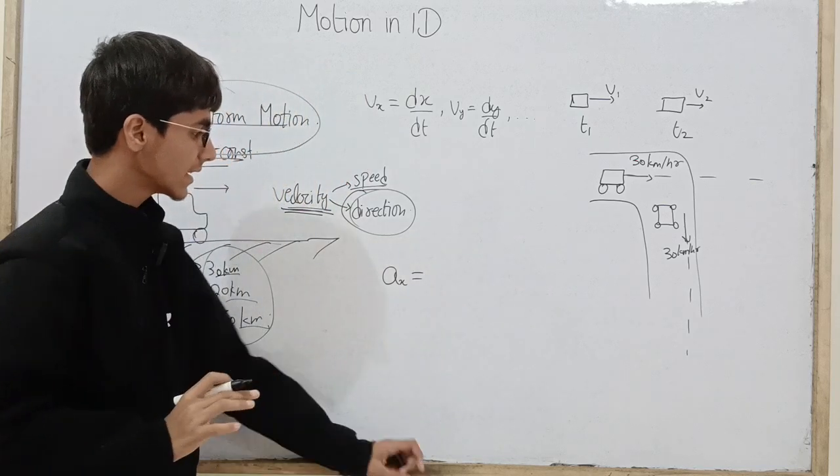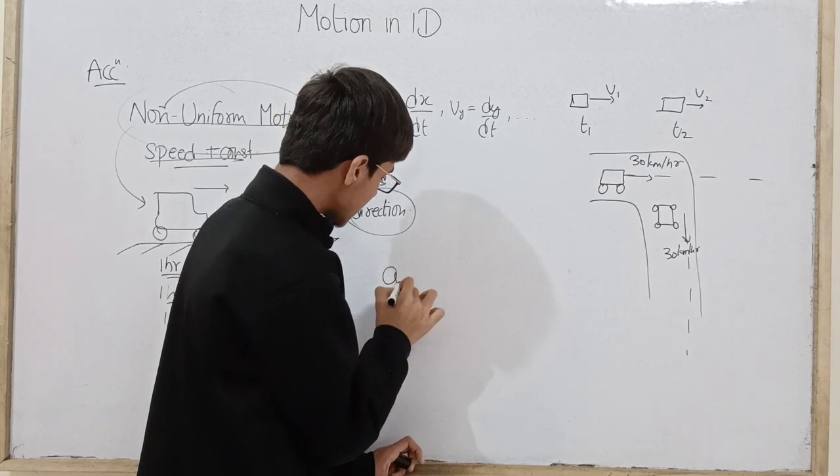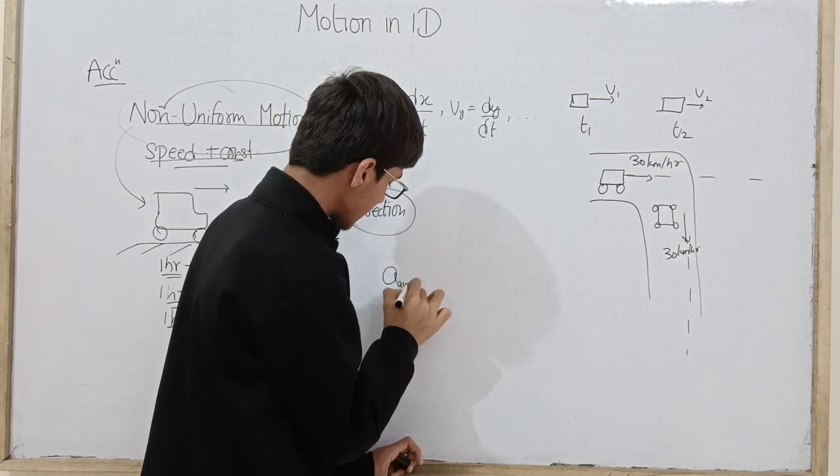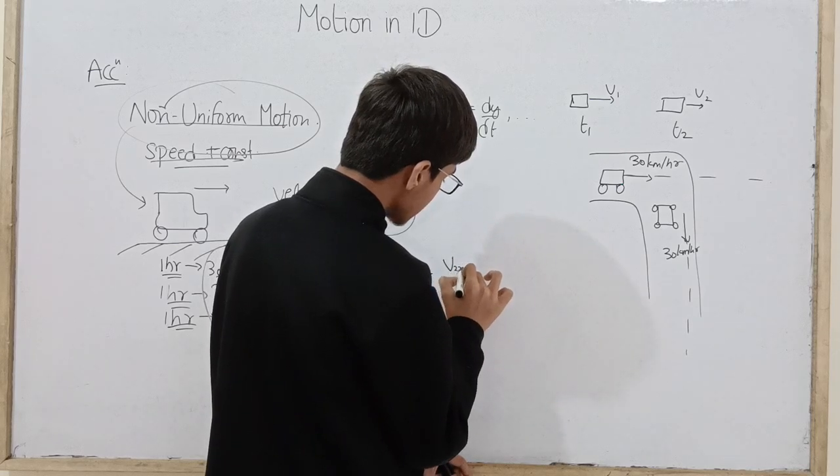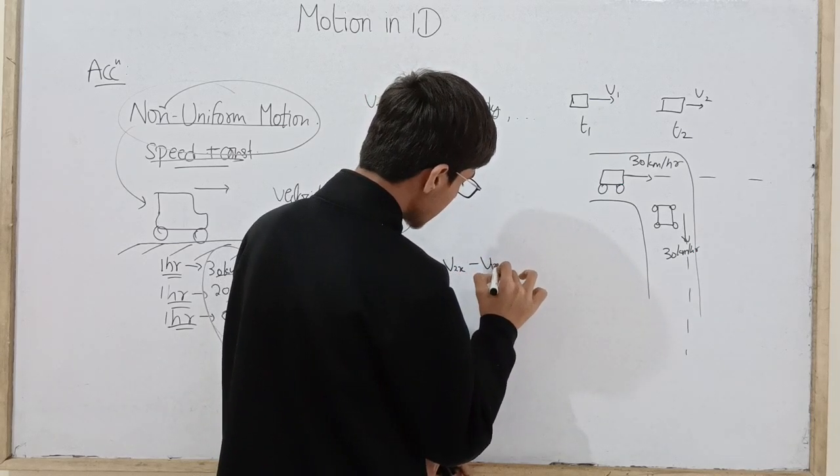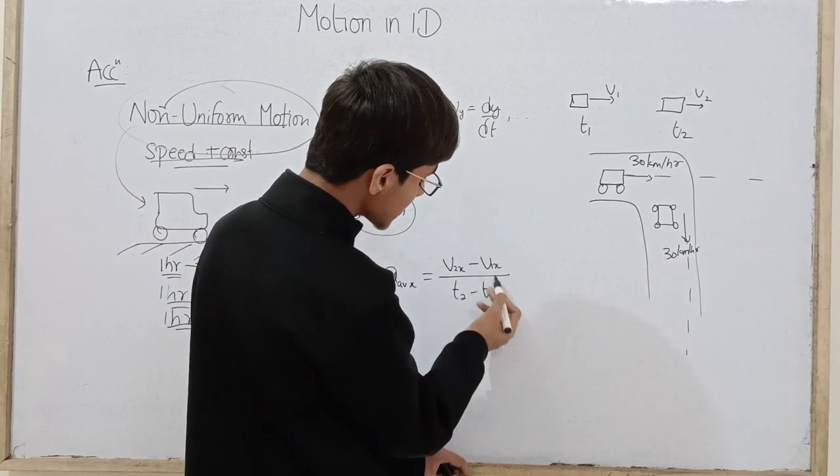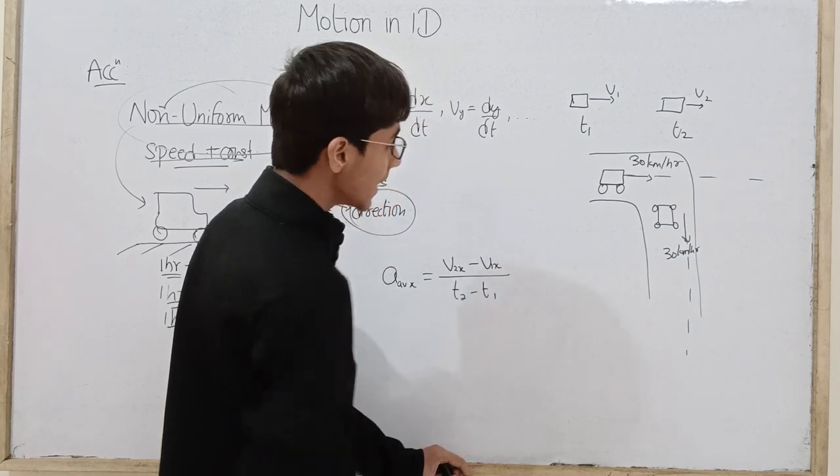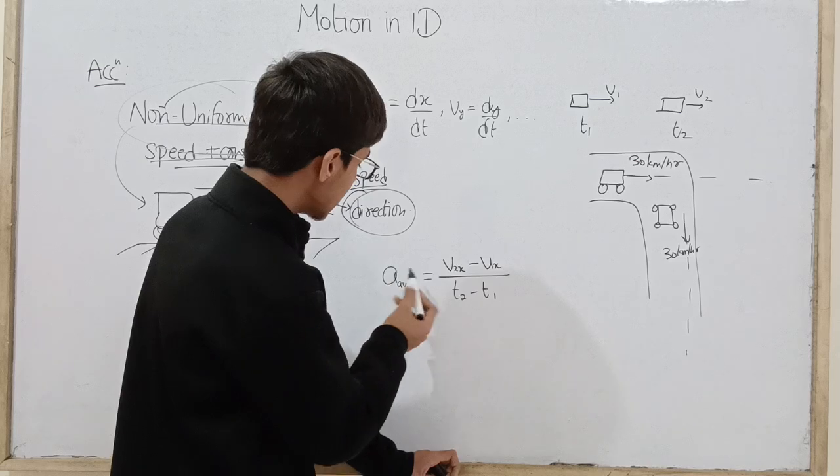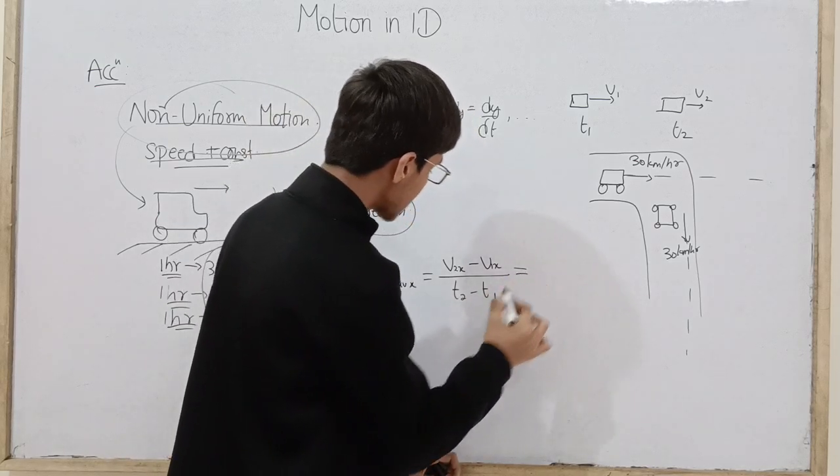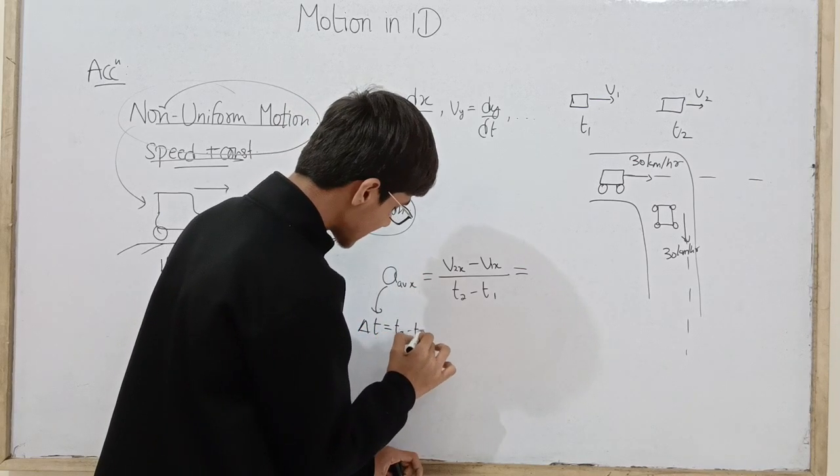The average acceleration in x direction define karte hain, the final velocity in x direction v2x minus initial velocity in x direction over t2 minus t1. Agar object ke paas t1 time pe v1x, x mein v1x iski velocity thi, t2 time pe v2x ho gayi, then this is defined to be the average acceleration during Δt which is equal to t2 minus t1.